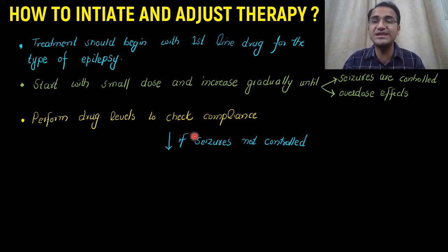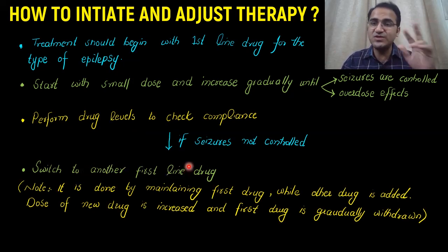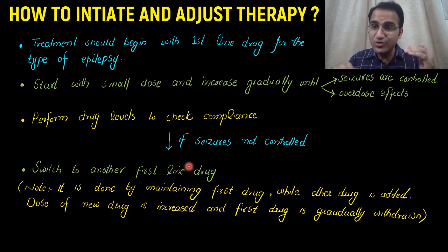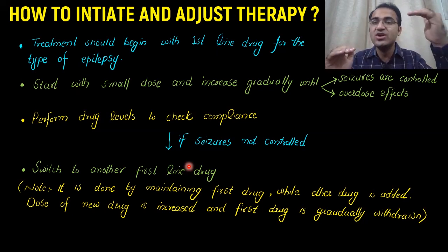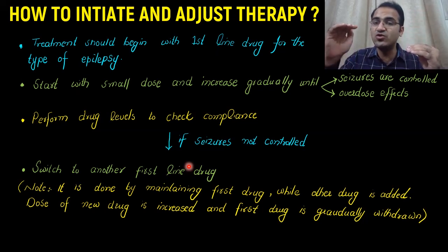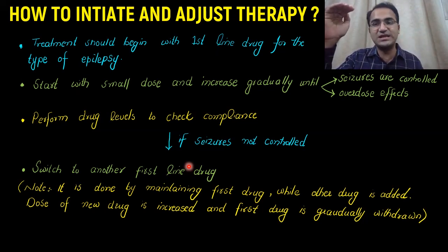Even after checking compliance and reaching the maximum dose, if seizures are not controlled, switch to another first-line drug. However, you cannot directly stop one drug and start another. Start the second drug while continuing the first, slowly lower the dose of the first, increase the dose of the second, and finally withdraw the first drug.